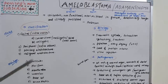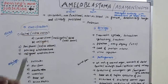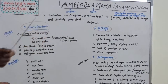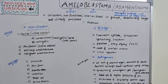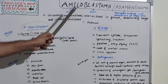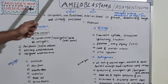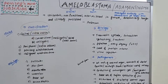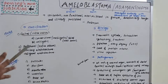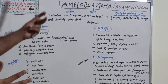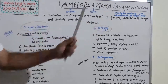From the name itself we get an idea: 'ameloblastoma' — 'amelo' relates to enamel, and 'blasto' means germ — so it originates from enamel tissues. Another name is 'adamantinoma' because of histological similarity with adamantinoma of long bones, which gave this name to ameloblastoma.